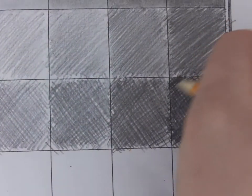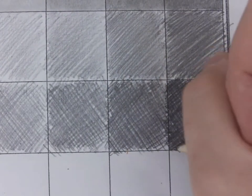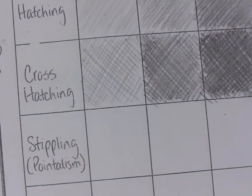Okay, so keep going until you can see the darkest. Okay, if you didn't finish the entire bar, you can go home and finish it, making sure that your values look nice and are different. We're going to move over to the next one, which is stippling.